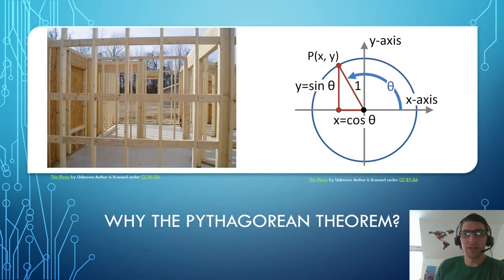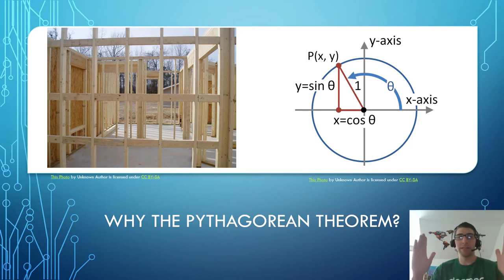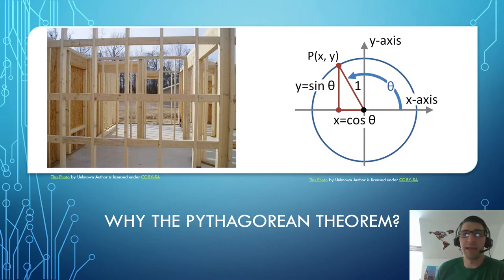So why study the Pythagorean theorem? The Pythagorean theorem is one of the most important theorems in all of geometry. It involves right triangles and right angles, so it is used in construction to make buildings upright and square. And right triangles are also the basis of a lot of future math that you'll learn — the Trigonometry Trifecta.